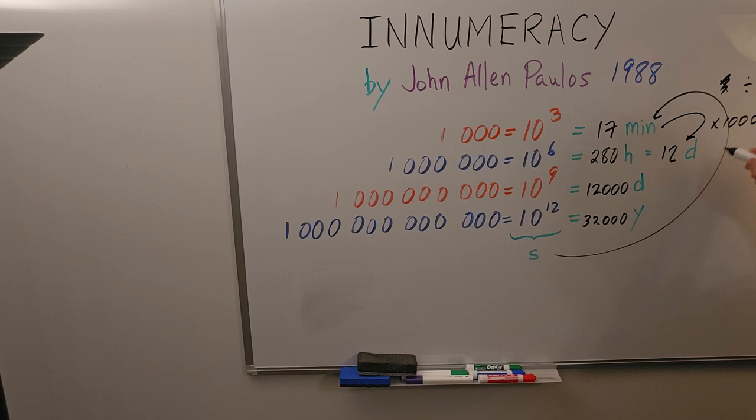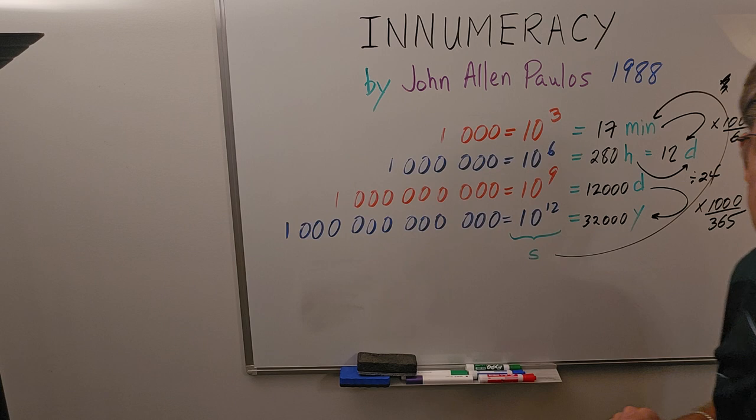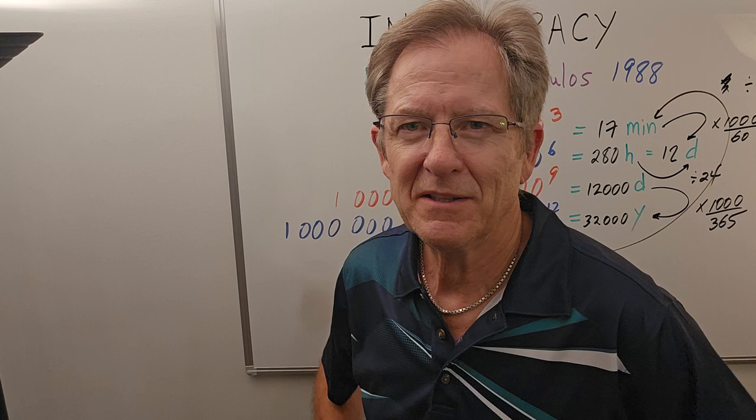And then divide by another 60, and then divide by another 60 to go from minutes to hours. And, of course, to go from hours to days, you would divide by 24. Here you just multiply by a thousand, and then to go from here to here, you multiply by a thousand, and divide by the number of days in the year, 365. So you can verify those numbers if you like.